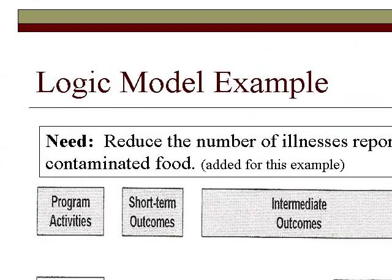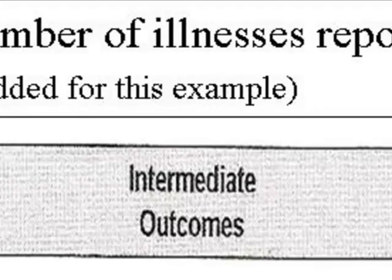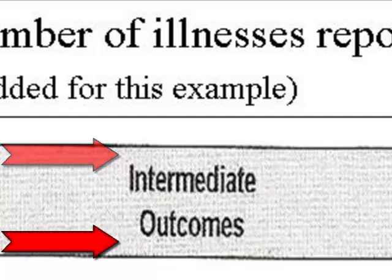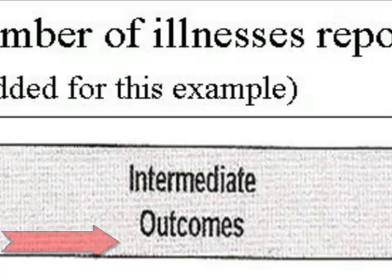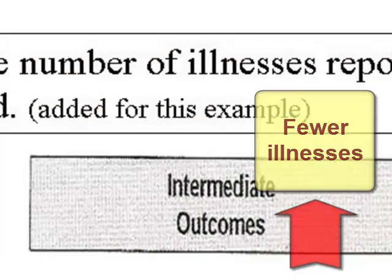These intermediate outcomes will then lead to two long-term outcomes or goals: one, a reduction in the level of microorganisms; and two, fewer violations during inspections. Finally, if each of these early outcomes are met, then the intended long-term outcomes or goals of fewer illnesses reported should follow.